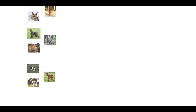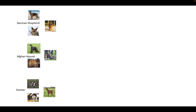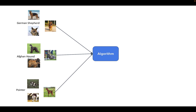Suppose that we want to train a machine learning model to recognize different breeds of dogs — like German Shepherd, Afghan Hound, and Pointer. To train a machine learning model which can recognize these three breeds, we are going to collect images of these dogs, a process called data collection. After collecting images, we pass them to our machine learning algorithm, which will find patterns in these images and we will get our trained model.